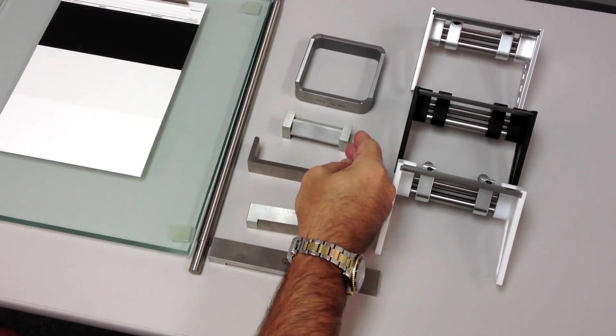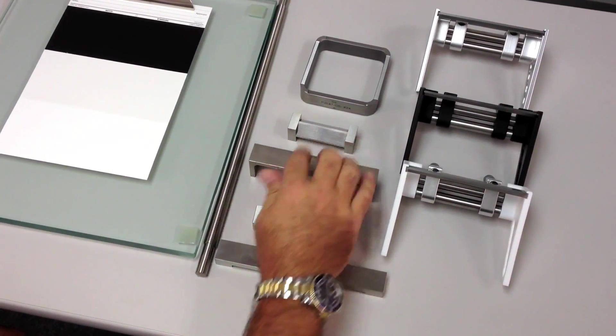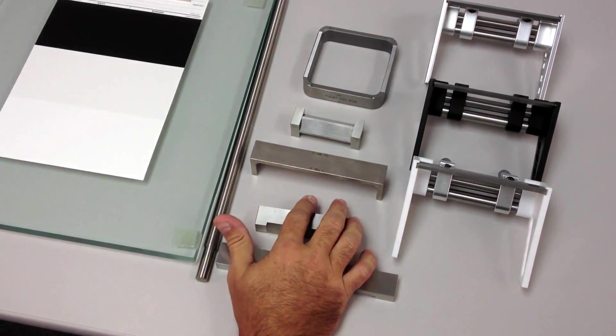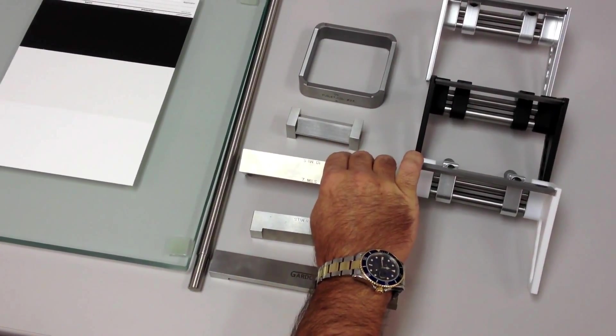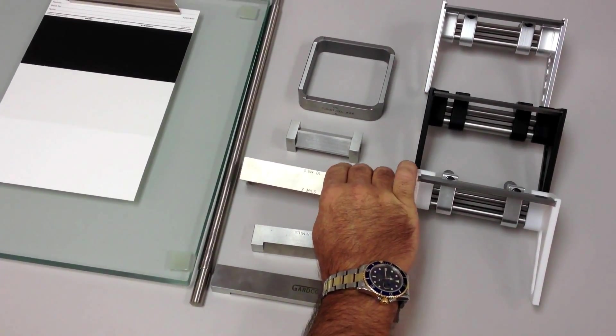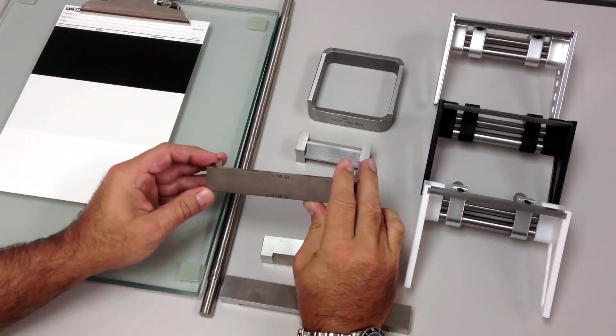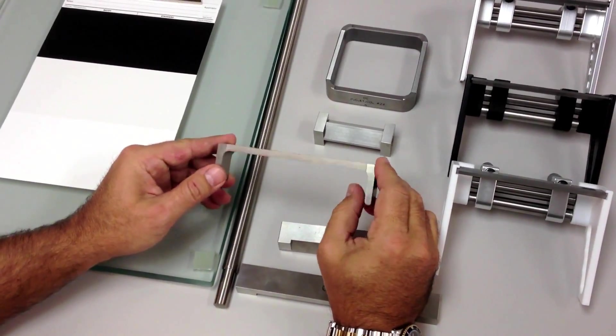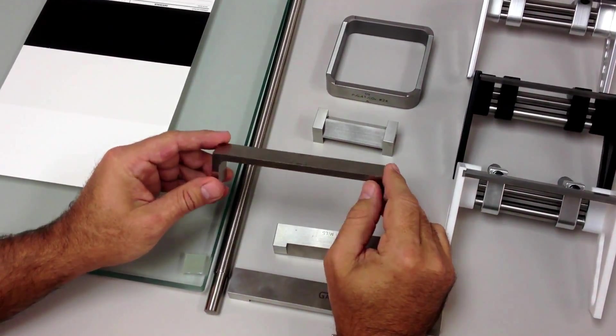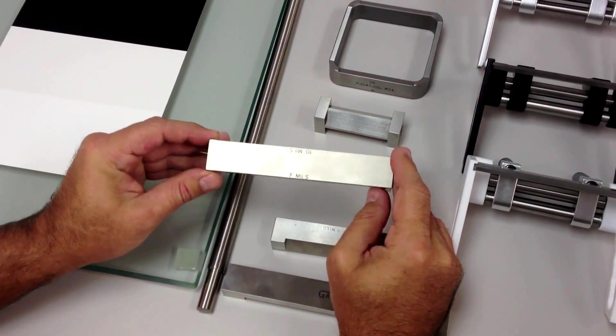This is just a different style of a similar type of applicator, a two path applicator. This particular one has a 7mm mark and a 10mm mark, so you have two choices where you can put down two film thicknesses.